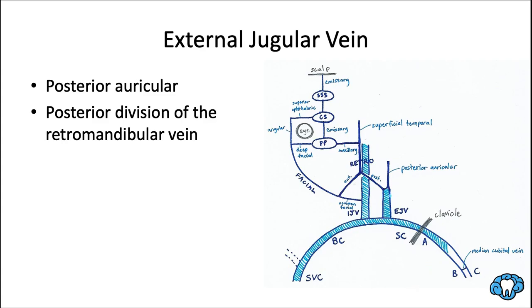Another vein that pours into the brachiocephalic vein is the external jugular vein. Just like we had external and internal carotid arteries, now we have external and internal jugular veins. The external jugular vein is a convergence of two veins with 'posterior' in their name: the posterior auricular and the posterior division of the retromandibular vein. The posterior auricular, of course, means behind the ear.